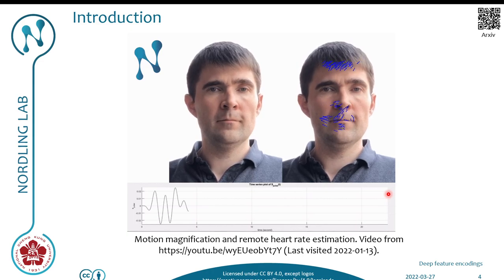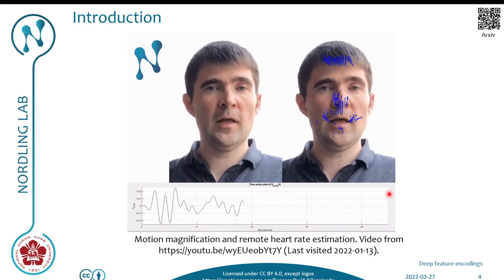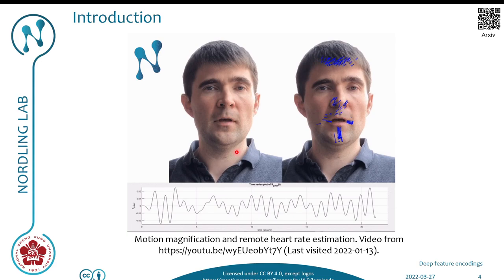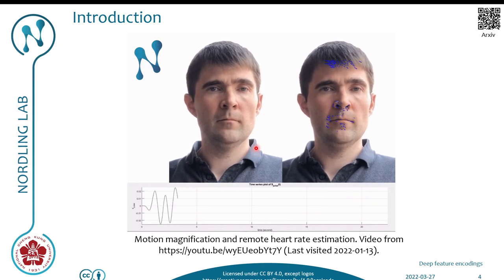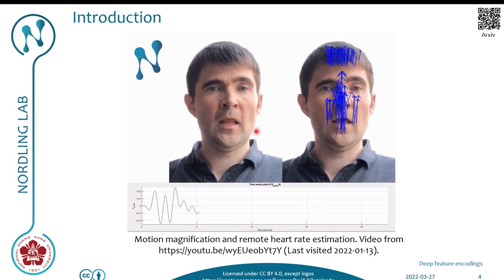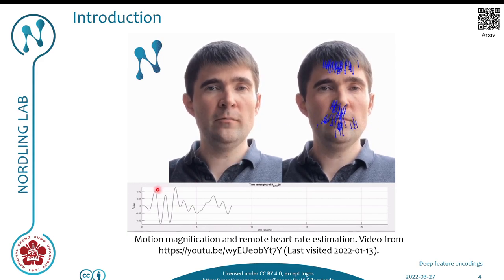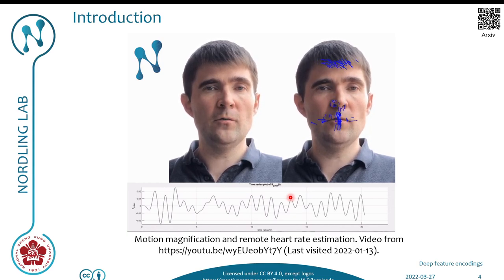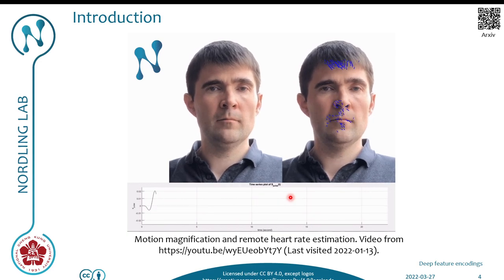Is it really possible to quantify these measures through video alone? Well, here we have a video of my advisor, Dr. Nordling, with the motion of several points in his face being enhanced by blue arrows. Please note that even though he is talking, we can still estimate his photoplethysmography signal using video-based methods and estimate his heart rate by counting the number of peaks on this photoplethysmography signal. This means that even though the signal is not visible to the naked human eye, using computer vision techniques we can see and analyze it.